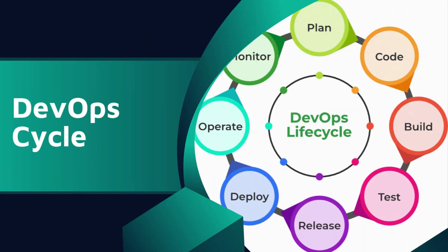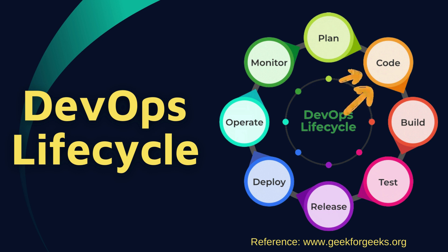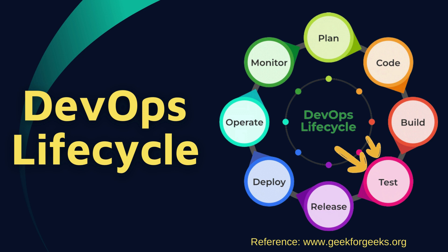Now let's talk about the DevOps lifecycle, which consists of several phases. Each phase contributes to seamless software delivery. The first phase is Plan — this step defines the project goals, scope, and requirements. Next is Code — where developers write the code for solutions. Then Build — where automation compiles code into executable forms. Then Test — where automated testing verifies code quality, functionality, and security, and detects issues at an early stage.